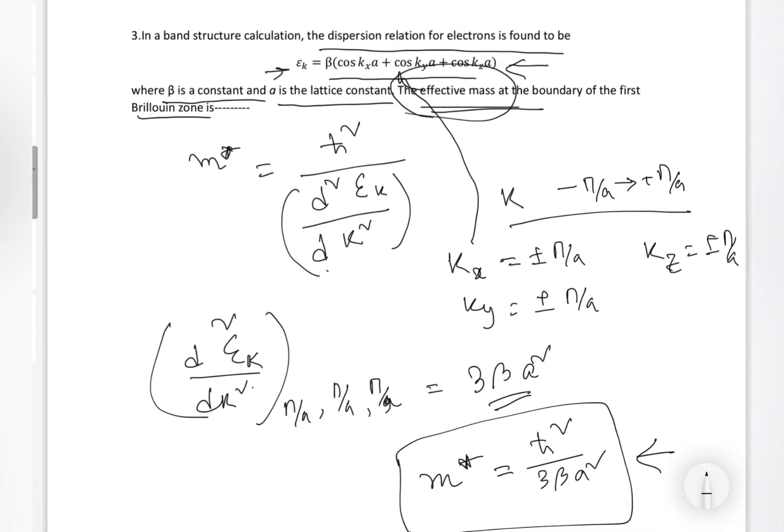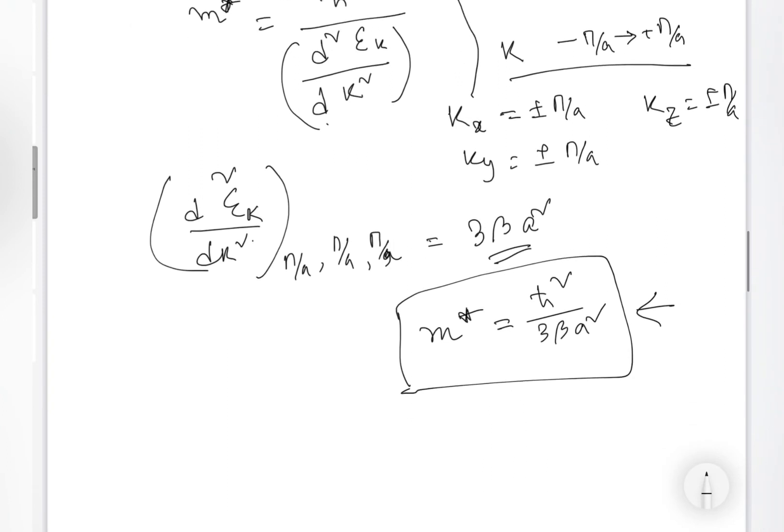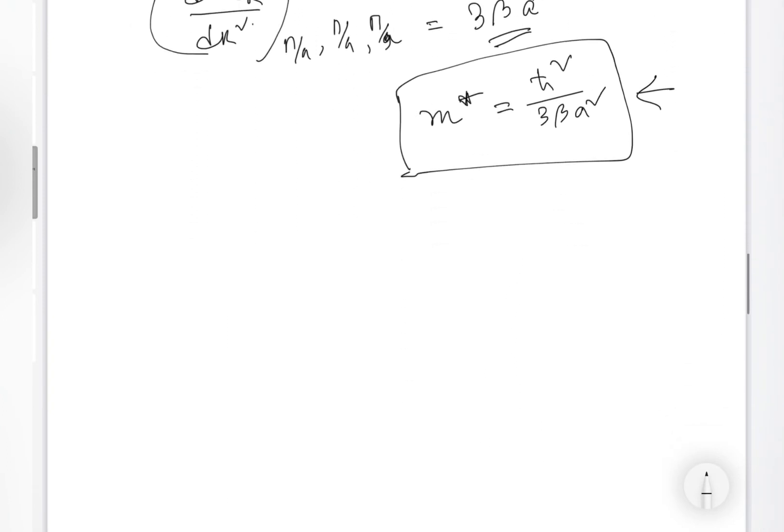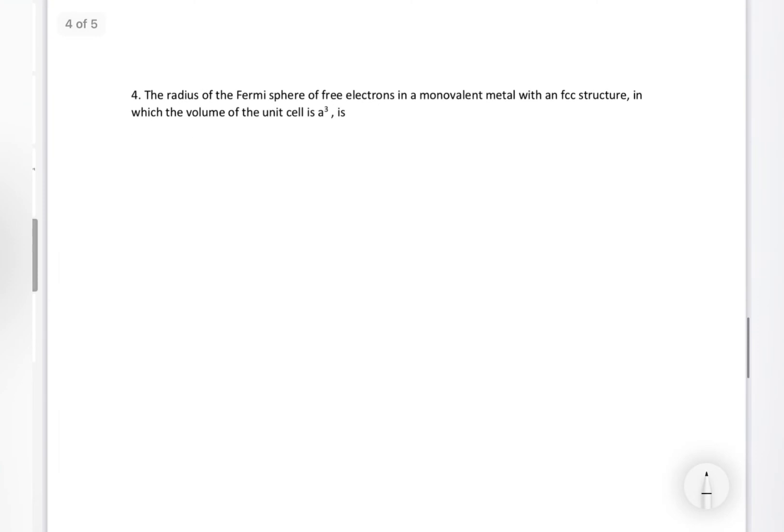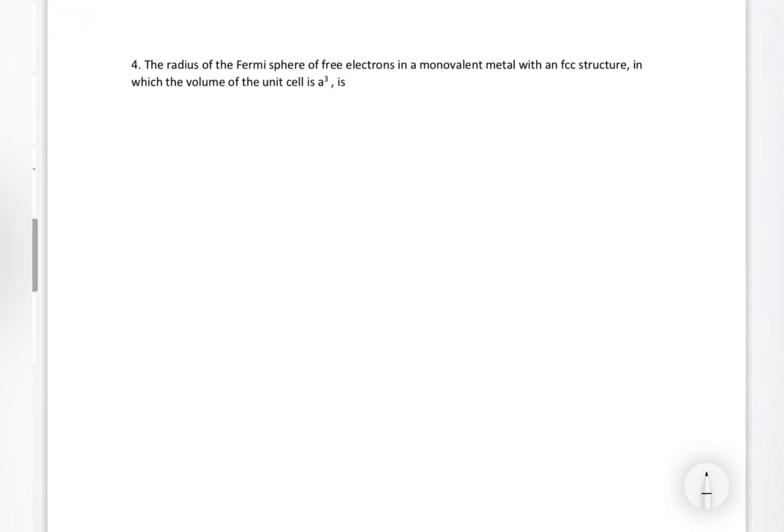This pattern problem comes several times, I have seen, repeatedly. Anyway, moving ahead. What they are telling? The radius of Fermi sphere of free electron in a monovalent metal with an FCC structure. This is point to be noted, FCC structure, in which the volume of the unit cell is a³. This is also to be noted.